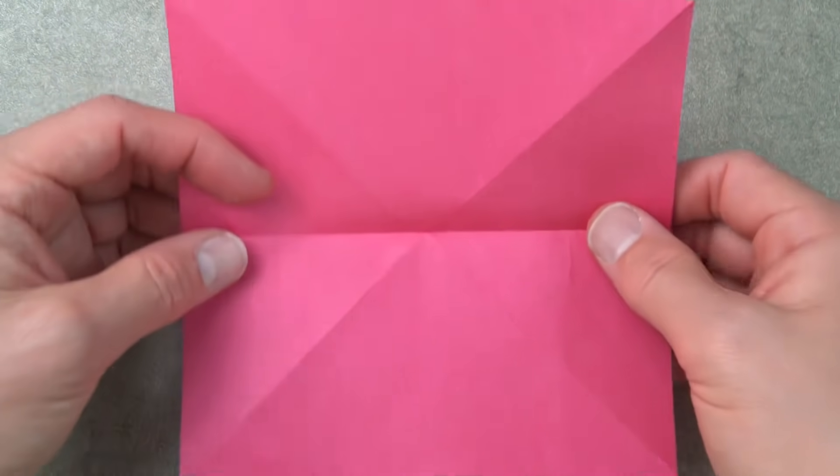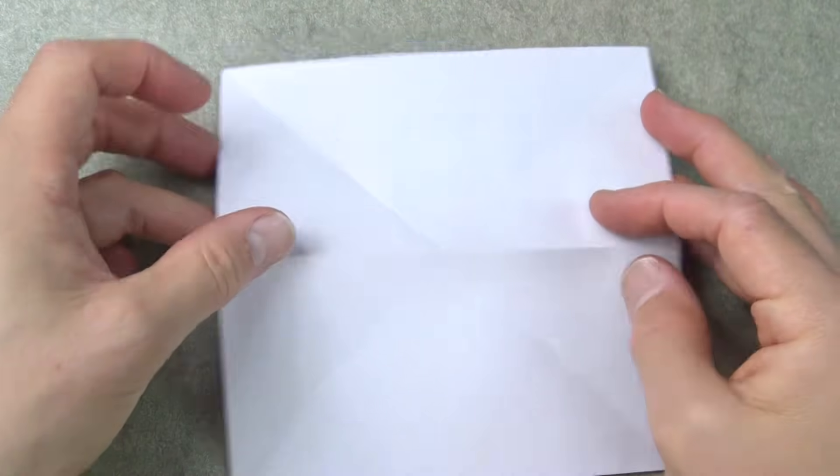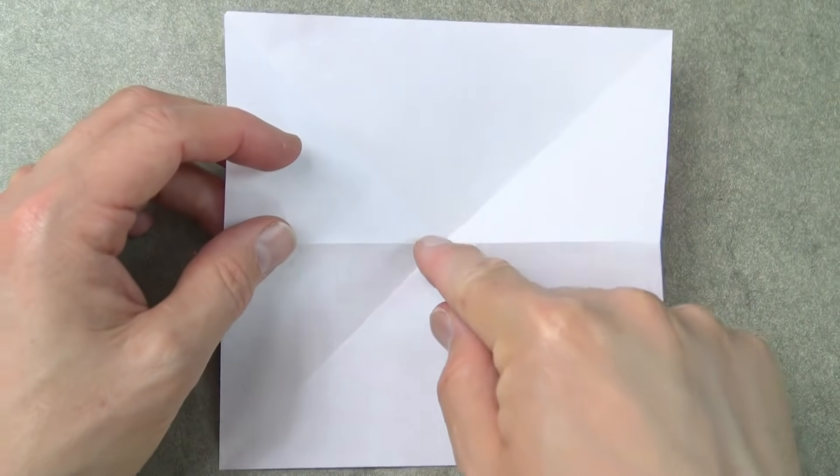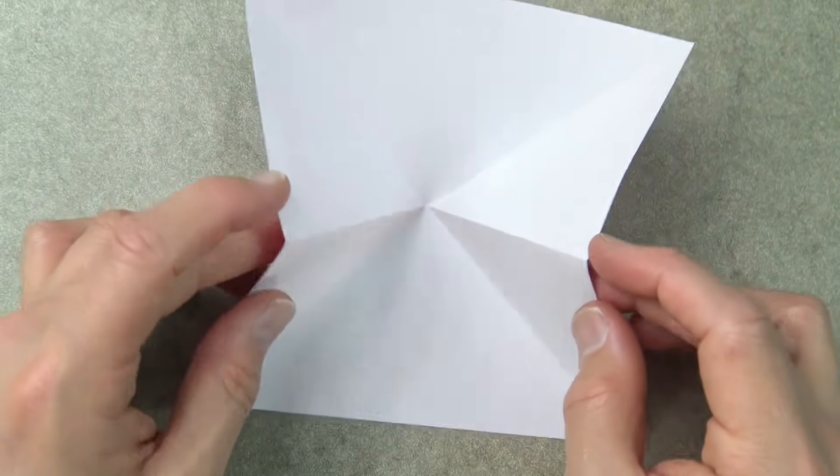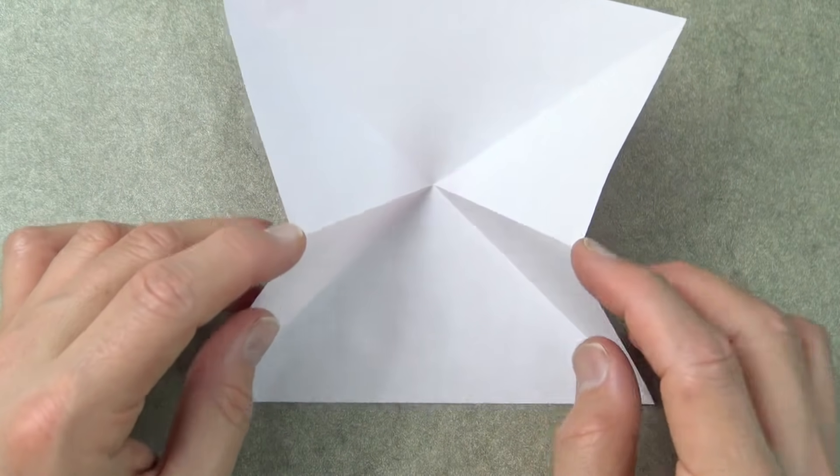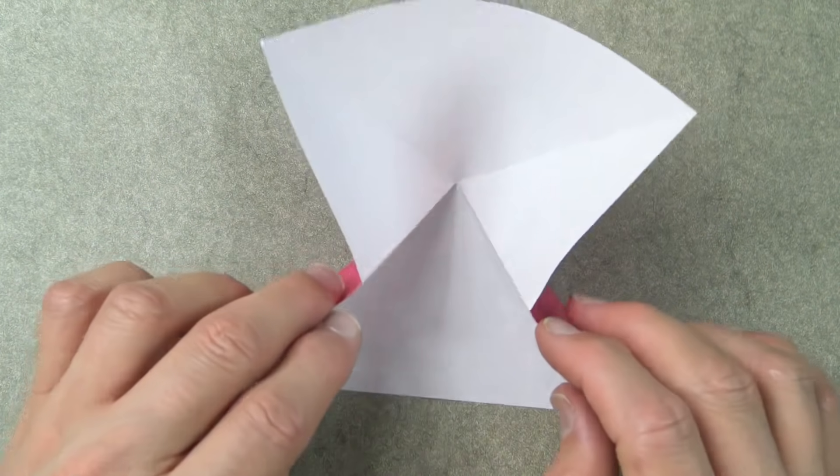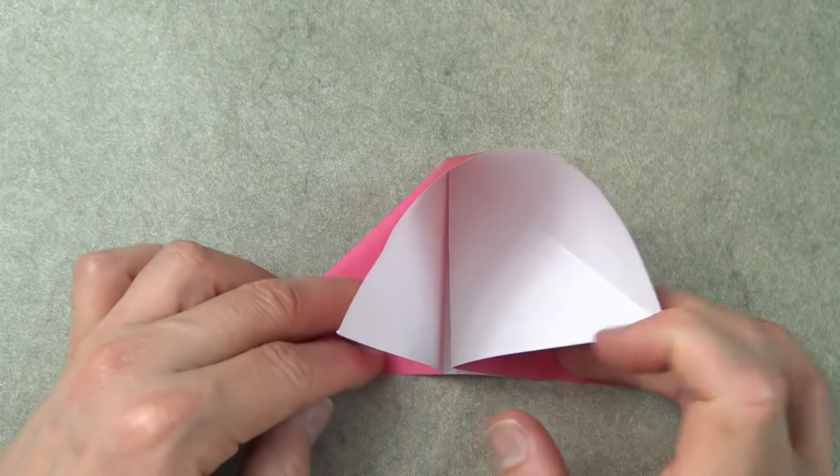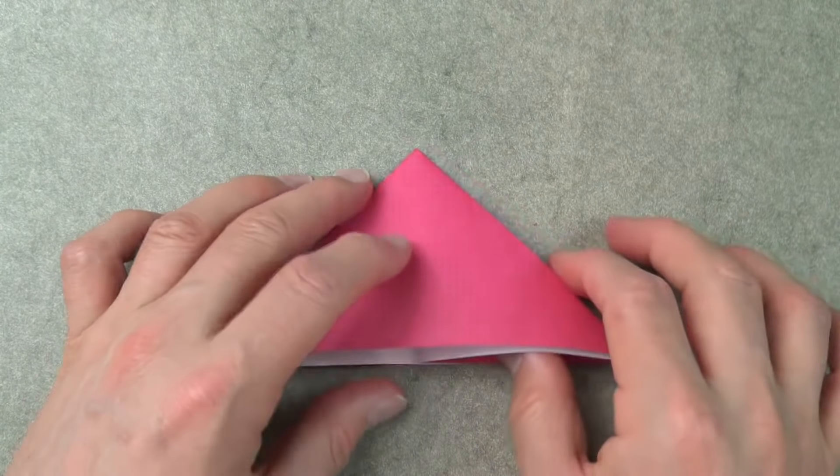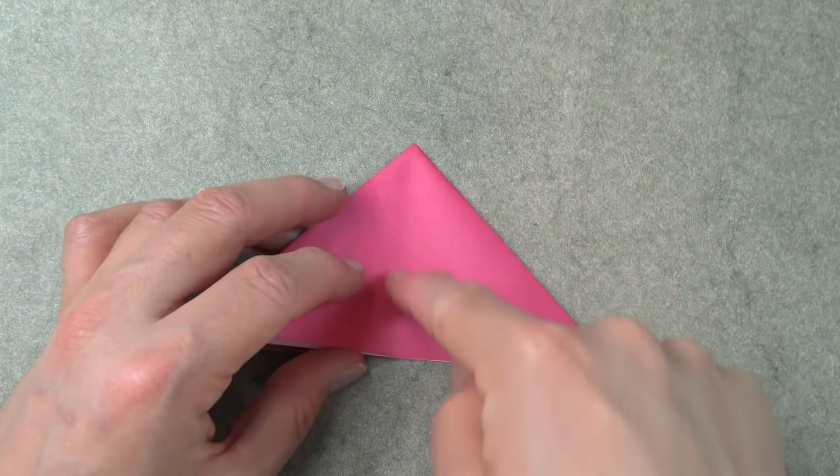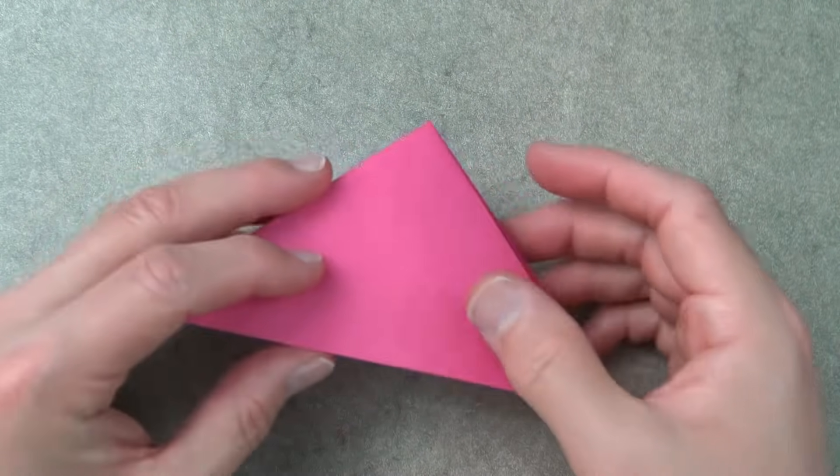Unfold, turn over, and now push the middle point in and bring these two points down to the bottom edge like this and flatten. Unfold, and here we have the water bomb base with no creases down the middle.